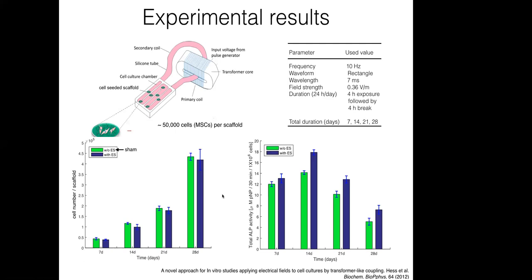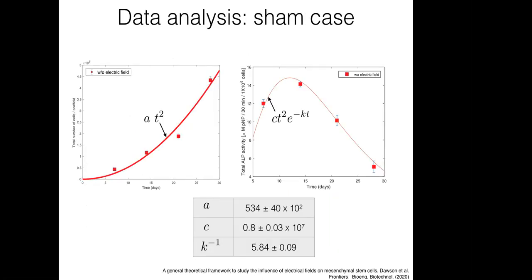The experiments showed that the total number of cells over time had no significant difference between cells that were stimulated and cells that were not stimulated. For the unstimulated case, the data can be fit by two functions: the total number of cells grows quadratically with time, and the ALP activity goes up and then decays — both are very well captured by these functions.